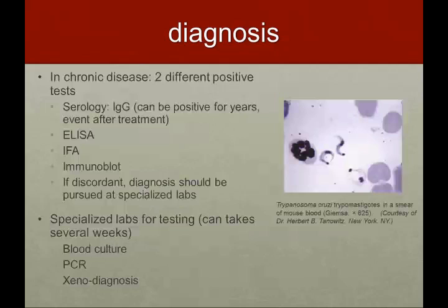In chronic disease, it's pretty difficult since parasitemia is low. They recommend two different positive tests, either serology or IgG. Unfortunately, this can remain positive for a very long time — many years — even after treatment, so it doesn't tell us whether the patient is acutely ill. You can check ELISA, immunofluorescent assay, or immunoblot, and two of these have to be positive. If results are discordant, diagnosis should be pursued at a specialized lab. Also check an IgG maybe six months down the line. Specialized lab testing can take several weeks and delay treatment. You can also grow these in blood cultures, check a PCR, or do xenodiagnosis — where you infect vectors in a lab and see if it actually grows.